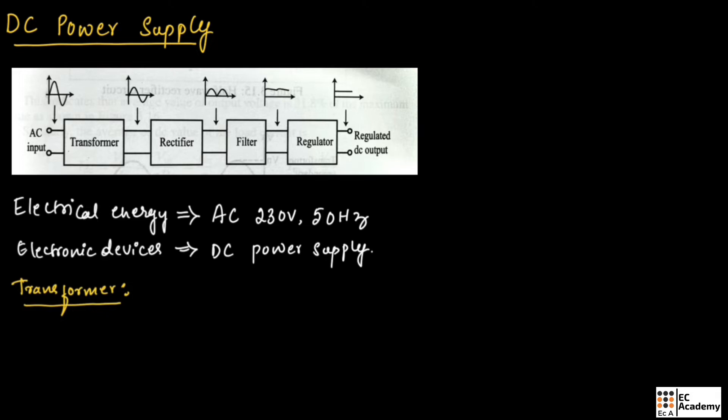For DC power supply, the transformer will step down the AC input voltage to a desired voltage level. We understood that transformer can perform both step up operation as well as step down operation. But for DC power supply, we require a transformer that can perform step down operation so that we can obtain a desired voltage level.